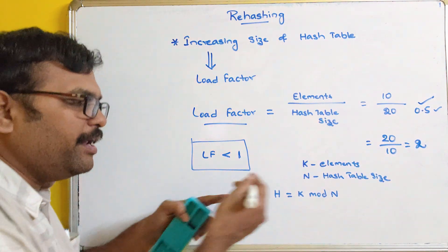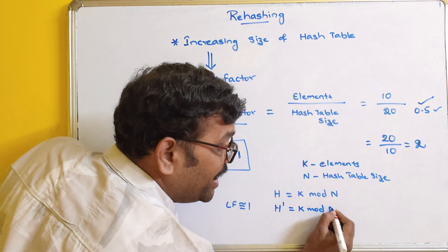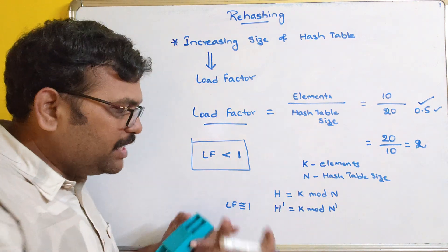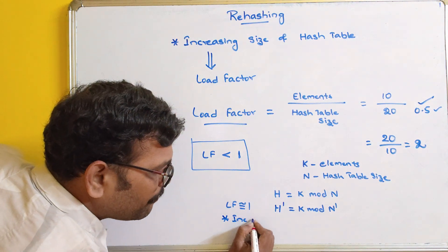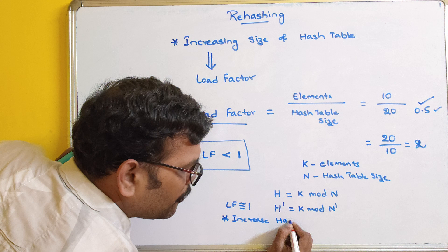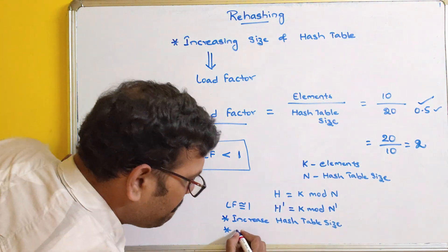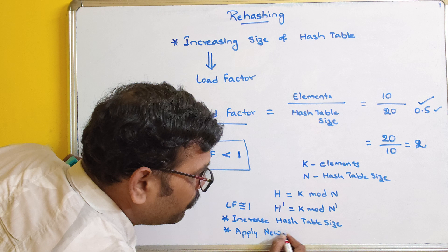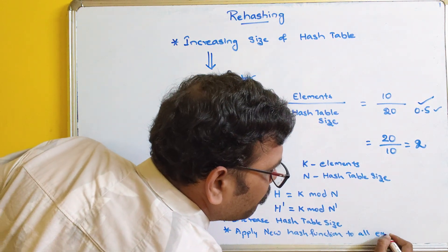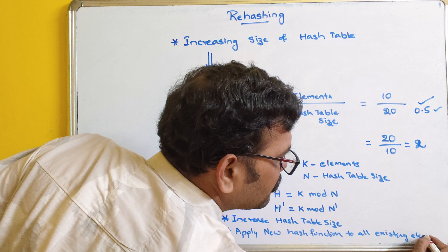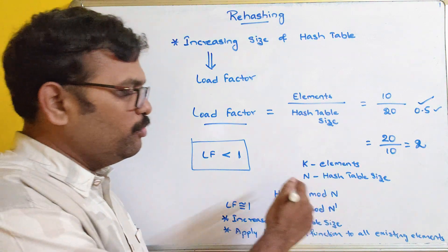Whenever the load factor is almost equal to 1, we have to change the hash size. The new hash function becomes h' = k mod n', where n' is the new size. The first step is to increase the hash table size. The second step is to apply the new hash function to all existing elements. Whenever we increase the size, the complete procedure should be repeated with the new hash table.